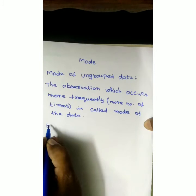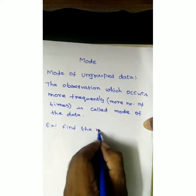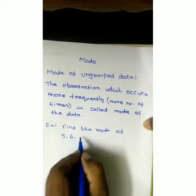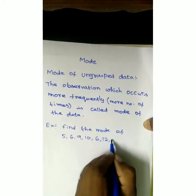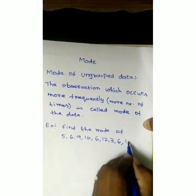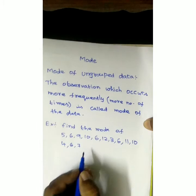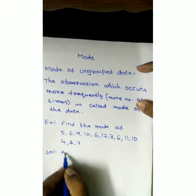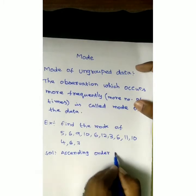That is the mode of ungrouped data. Example: find the mode of 5, 6, 9, 10, 6, 12, 3, 6, 11, 10, 4, 6, 7. Solution — easy method. Let us arrange the observations in ascending order.